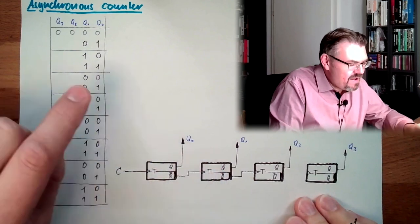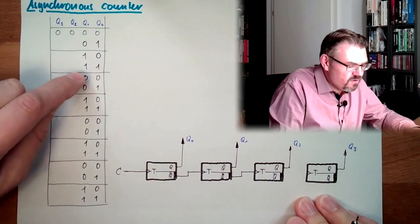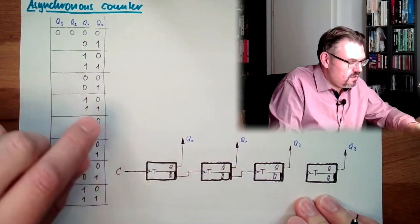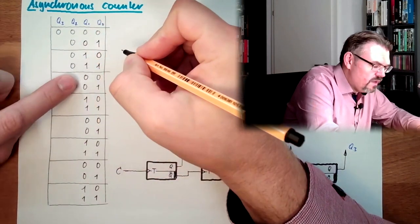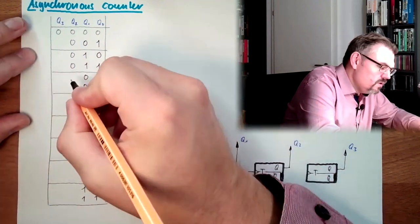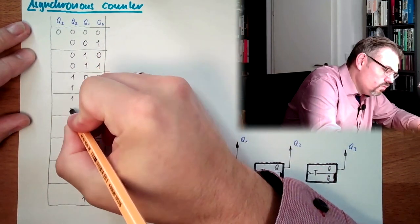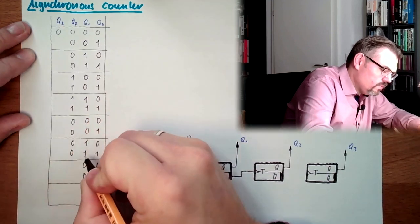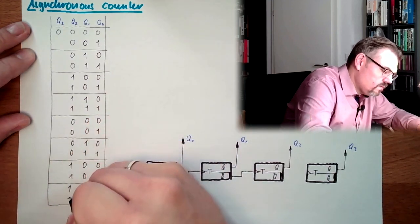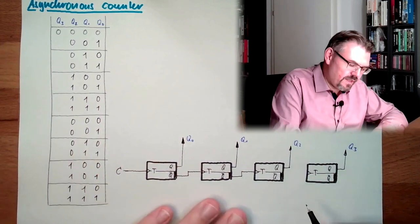And again, every time I switch here from 1 to 0, the third one will toggle. So, here it has no reason to toggle, here it has no reason to toggle, here it has no reason to toggle. And here, 1 to 0, toggling. 1 to 0, toggling. 1 to 0, toggling.